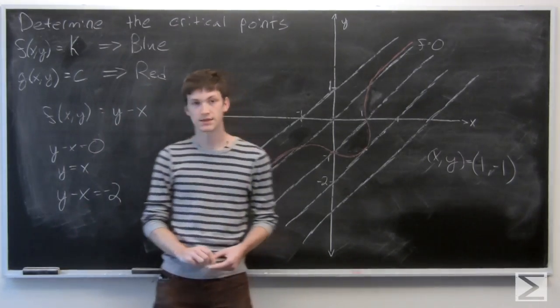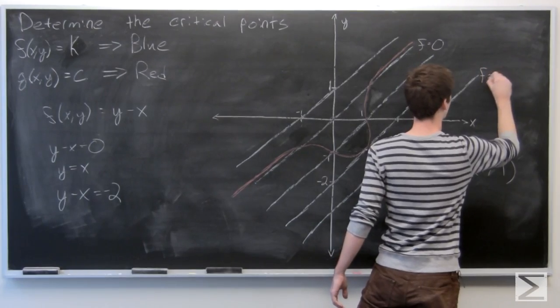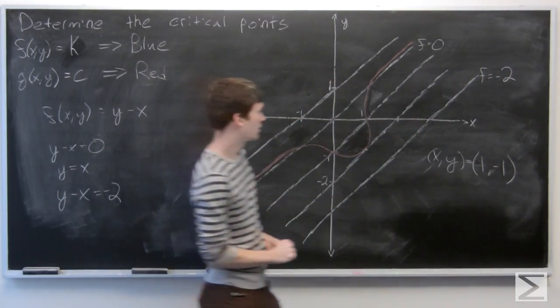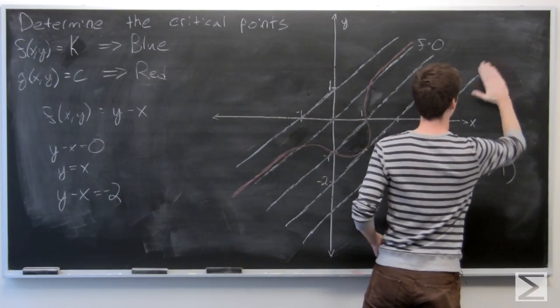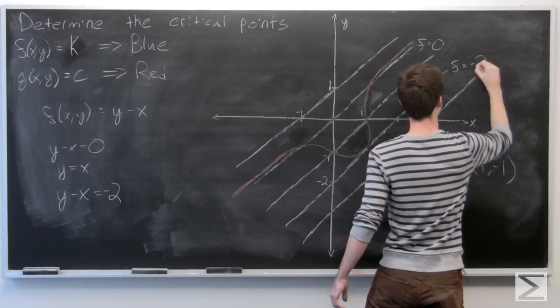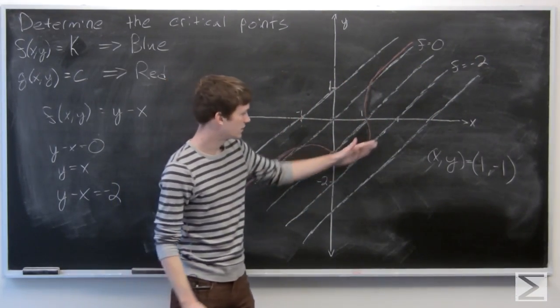So we have y minus x equals negative 2. So we have f equals negative 2 on this level curve.